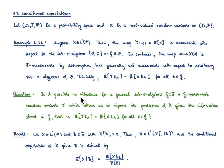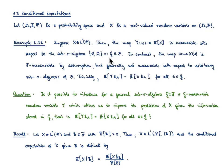The question is: for a general sub-sigma-algebra G of F, is it possible to introduce a G-measurable random variable Y that improves the prediction of X given the information stored in G? We want the property that E[Y · 1_A] = E[X · 1_A] for any A ∈ G. And we note that if G = F, then Y should equal X almost surely — we store all the information.